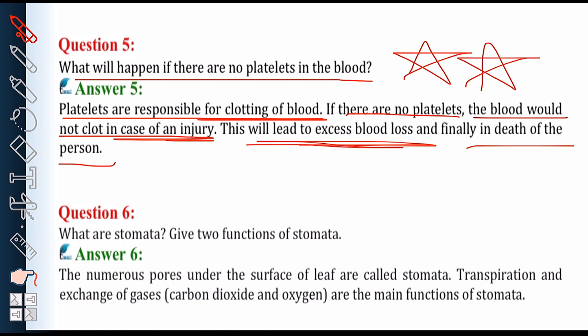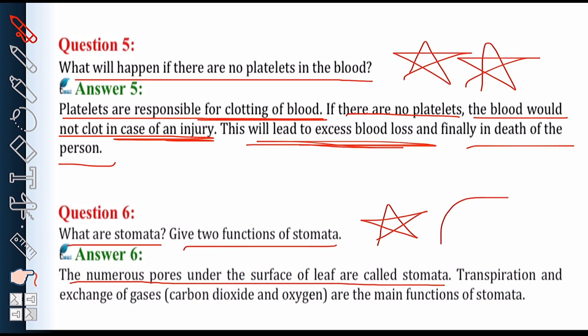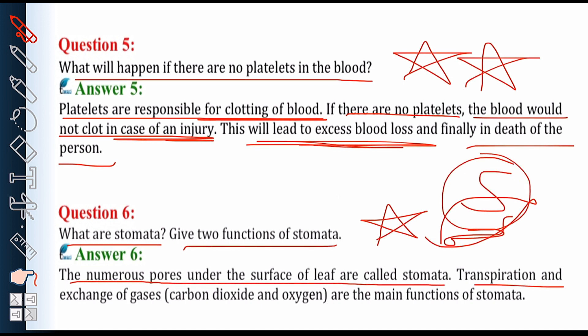Question number 6 — what are stomata? Give two functions of stomata. Stomata are numerous pores present on the surface of the leaf. The two main functions of stomata are: transpiration, where excess water evaporates back into the atmosphere; and exchange of gases — that is carbon dioxide and oxygen — between the plant and the environment.